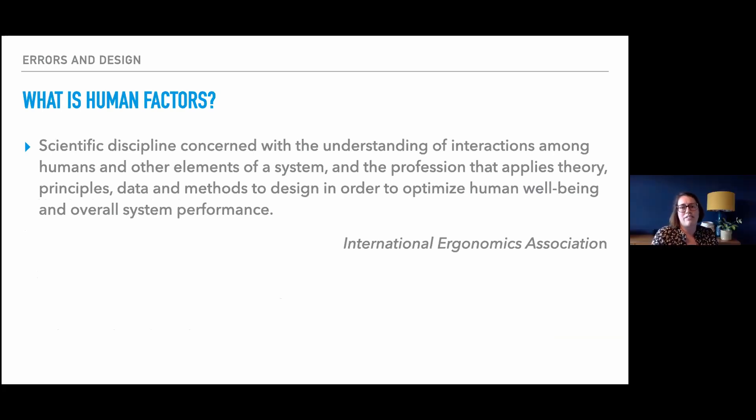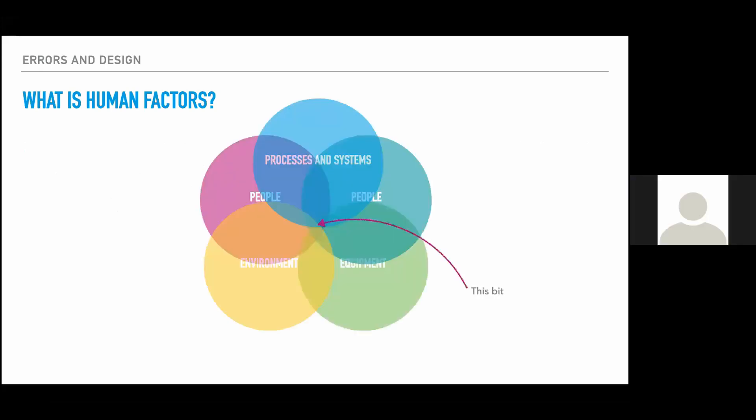The other key word I like to pull out from this is interaction, because I really think that's where human factors brings it. We're not just about the people, we're about how they interact with the systems, the processes, and so on. I much prefer a diagram to a textual definition. This diagram is very much based on the shell model of human factors, which took the different elements in the system. So the people within it, the liveware, how they interact with each other, also how they interact with their equipment, the hardware, with the processes and systems, the software, and the environment with which they operate.